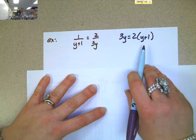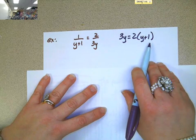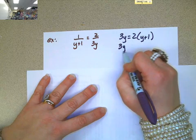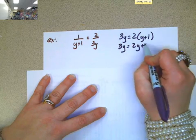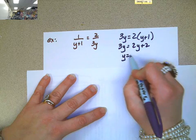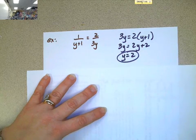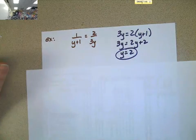Of course, it's really important to make sure you put parentheses around this because it's not 2Y plus 1. It's going to be 2Y plus 2 when we distribute that 2. If I subtract 2Y from both sides, we end up with Y equals 2. So, those are some problems that you might have.